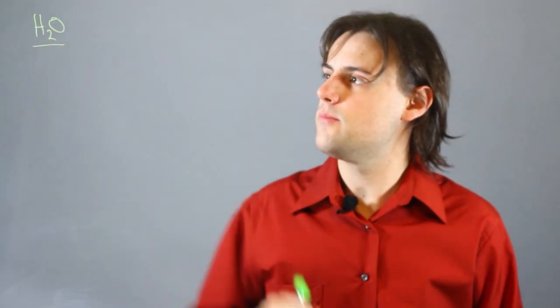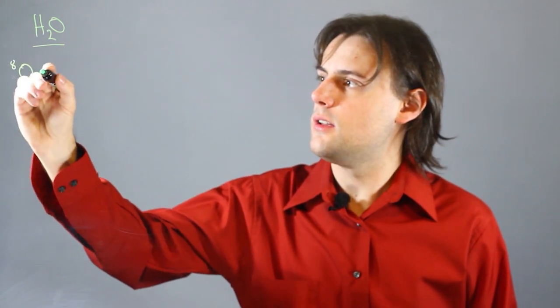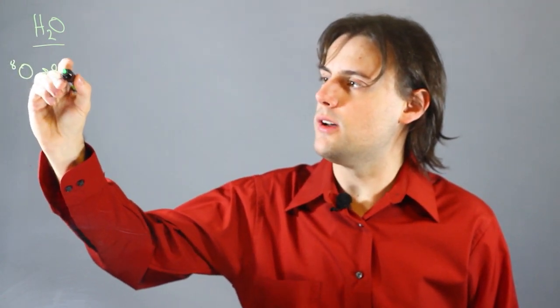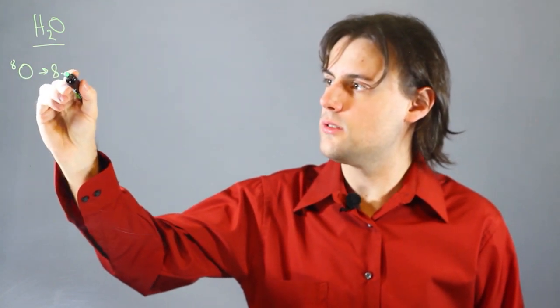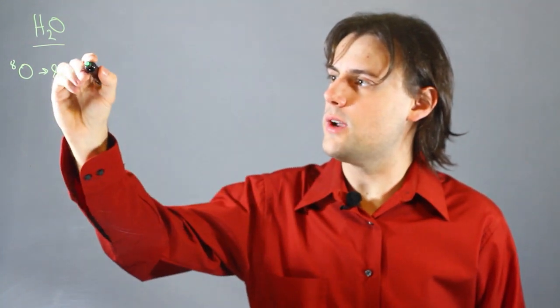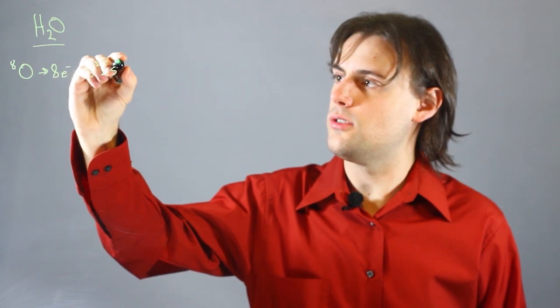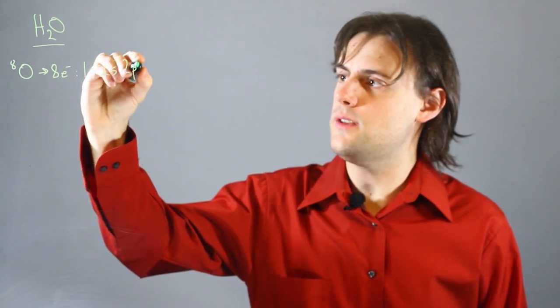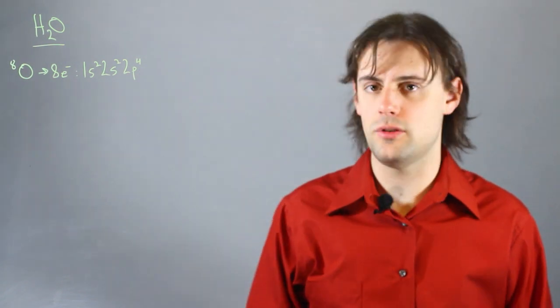If we consider as an example one molecule of water, which is H2O, we note that oxygen has eight protons, and hence, if it's electrically neutral, should have eight electrons. And the electron configuration would be 1s2, 2s2, 2p4, where you add up these electrons and they add up to the total of eight.